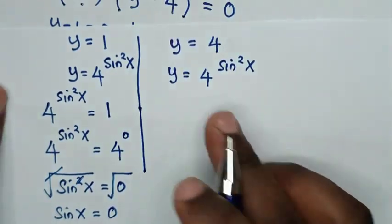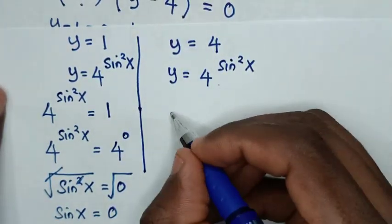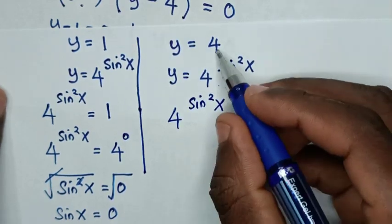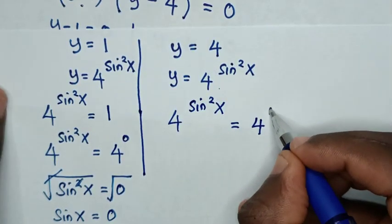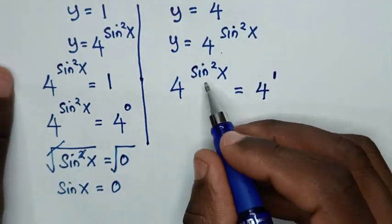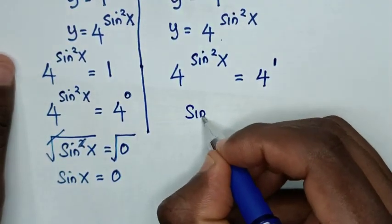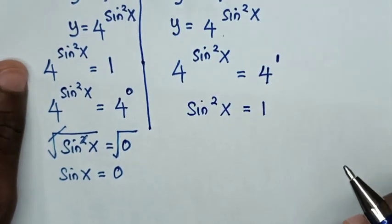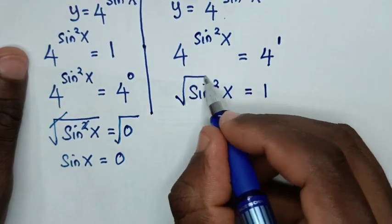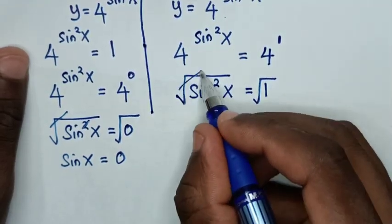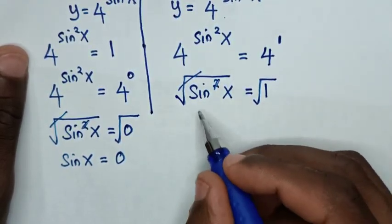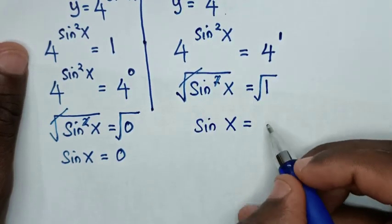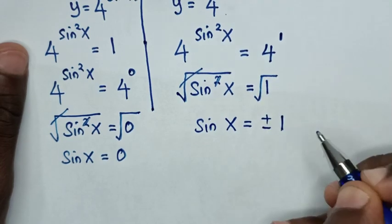From the second solution, we compare: 4 power of sine square x equals 4, which is the same as 4 power of 1. Because we have the same base of 4, we compare the powers: sine square x equals 1. Applying square root to both sides, sine x equals plus or minus 1.